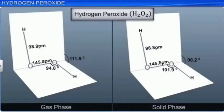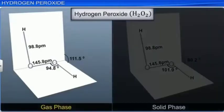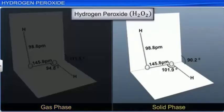In gaseous state, hydrogen peroxide has a dihedral angle of 111.5 degrees. Whereas, in solid state at a temperature of 110 Kelvin, it has a dihedral angle of 90.2 degrees. This affects its physical properties.